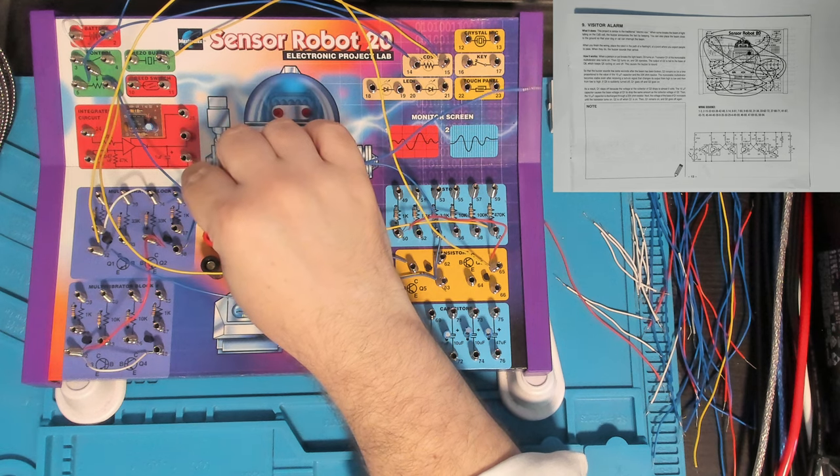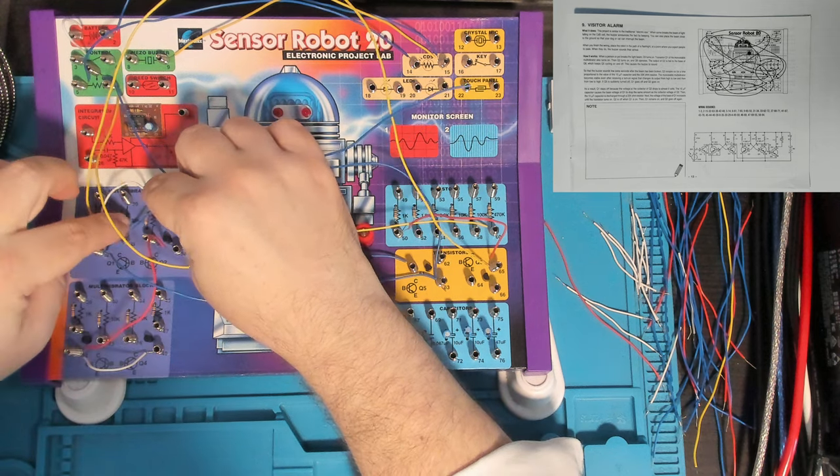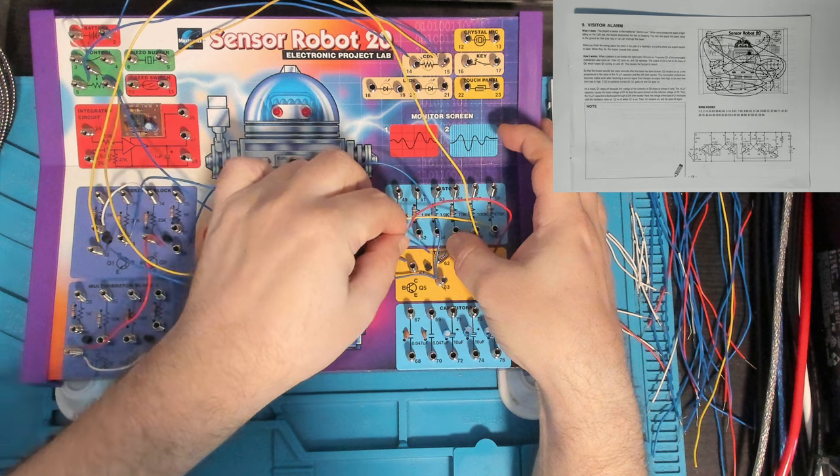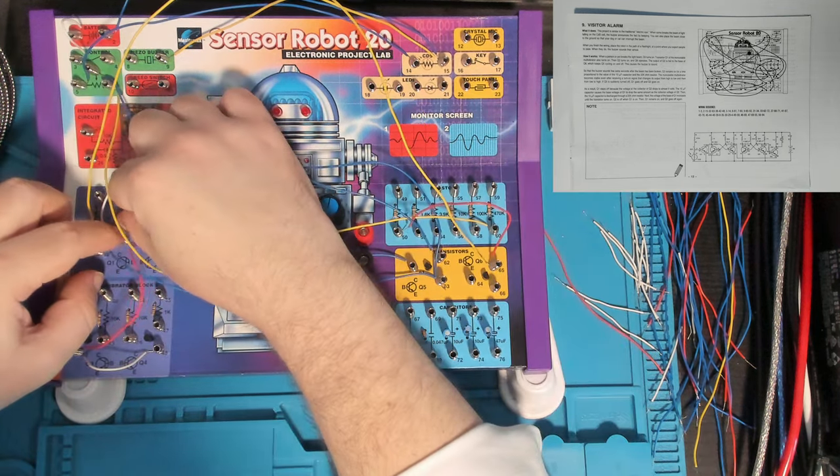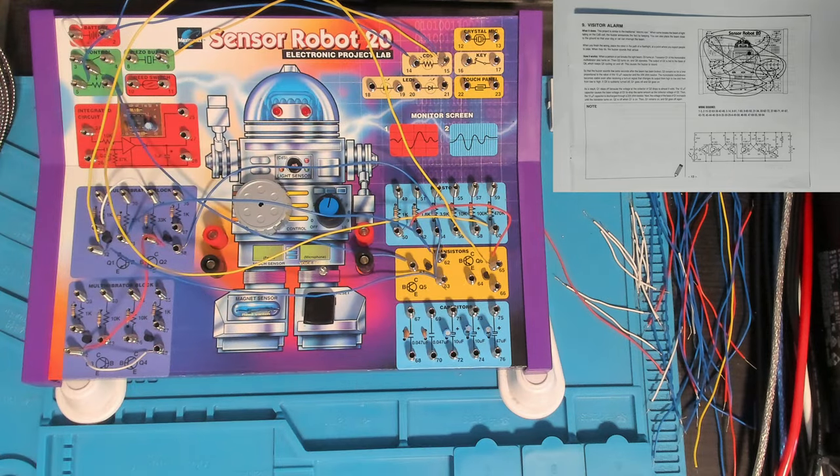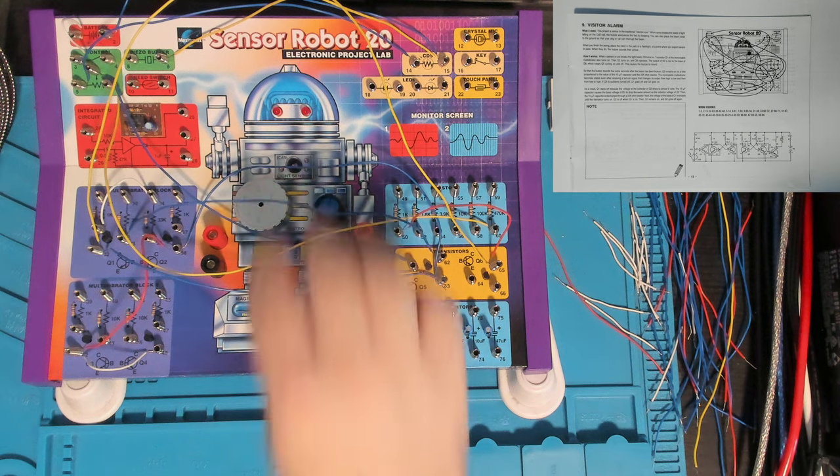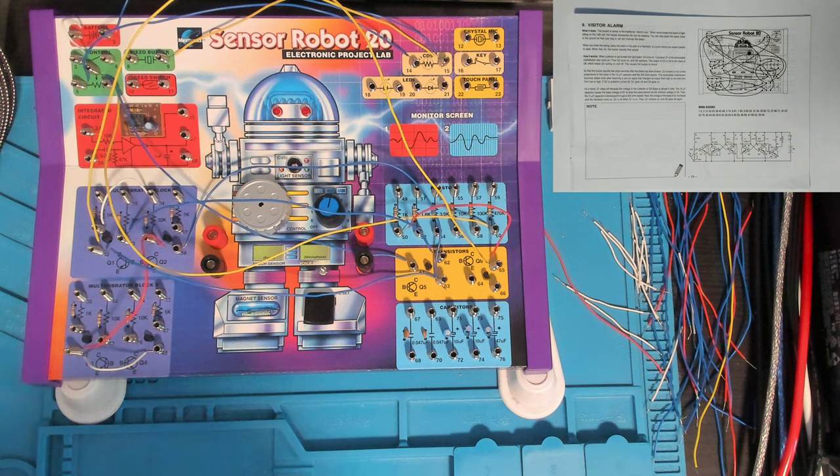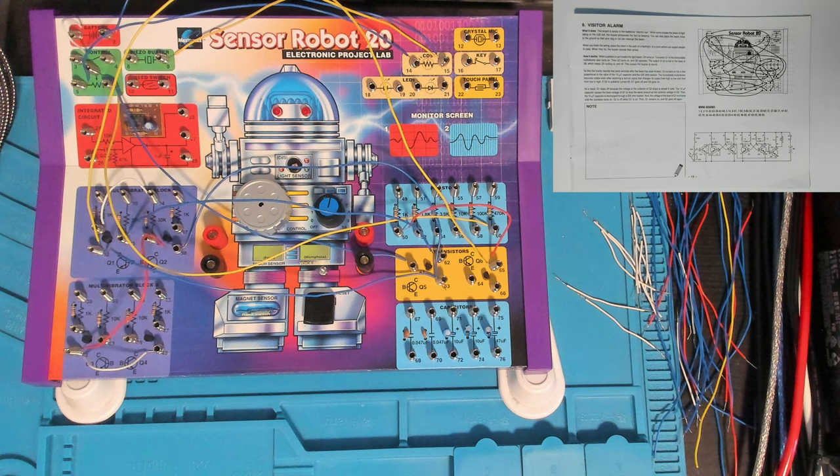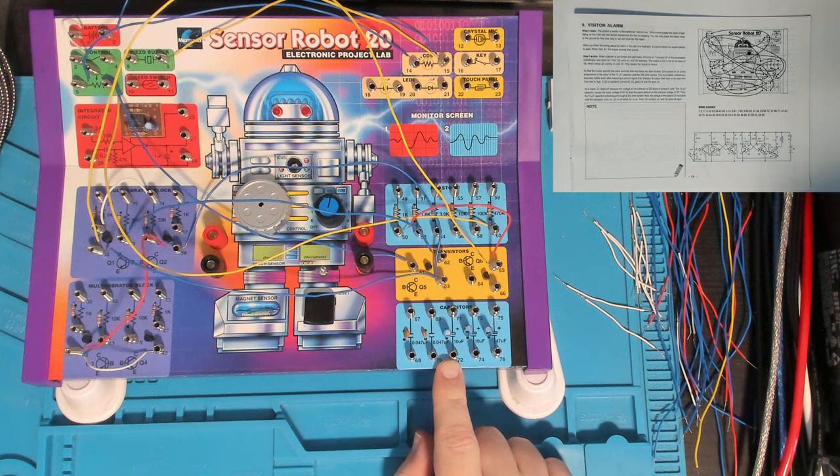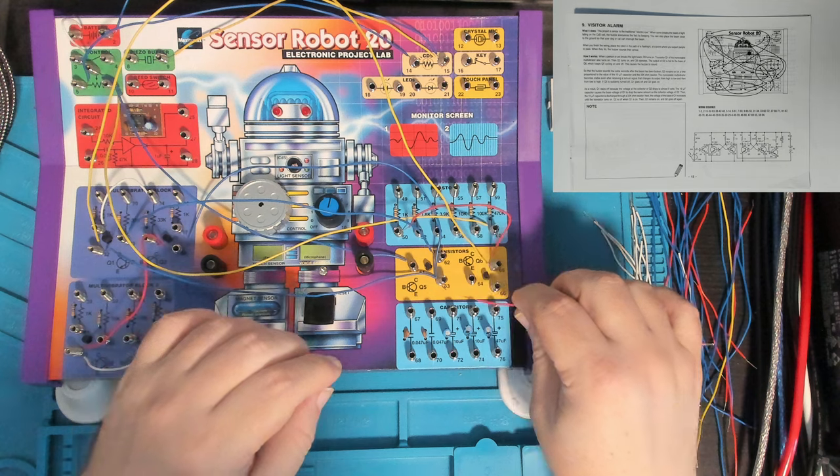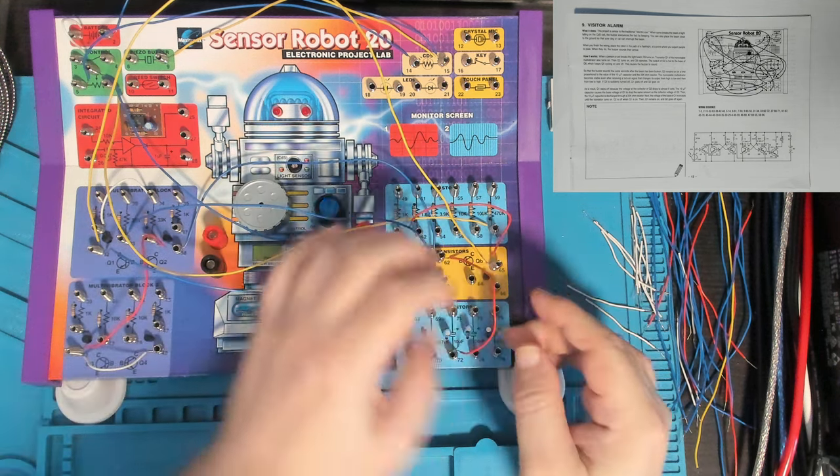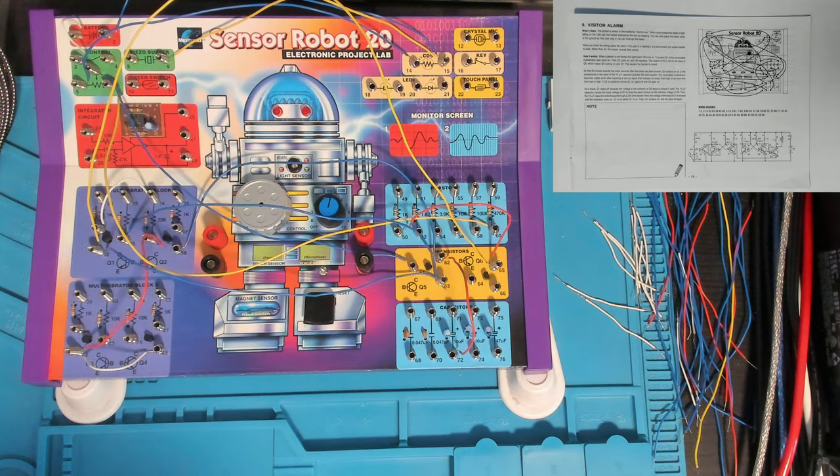And then 33 to 62. That's actually 33 is the base of Q1 over to 62, which is the collector of Q5. It's usually the base which receives the signal. Then 62 to 72, having our 10 microfarad capacitor, the negative side of it, connected up to the collector of Q5.